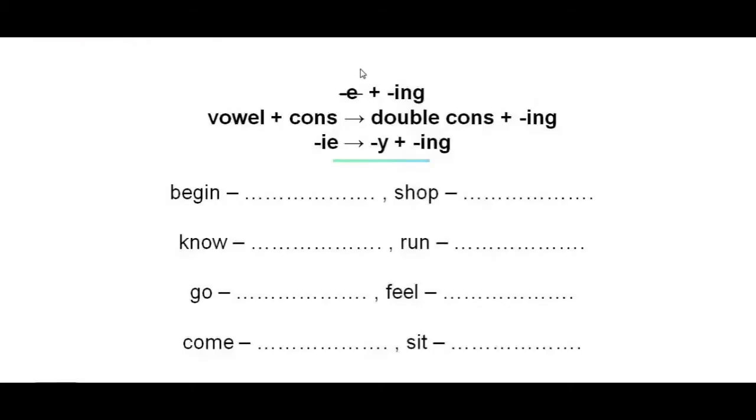Now let's review and practice a bit. Remember that when a verb ends in e, get rid of the e and then add -ing. And when a verb ends with a vowel plus a consonant, double the consonant and then add -ing. And when a verb ends with ie, change ie to y and then add -ing. Now provide the present participle form of the words below.